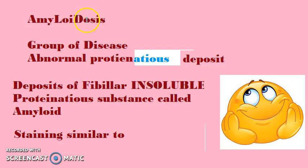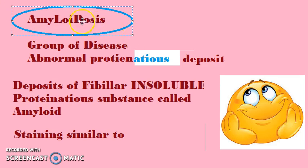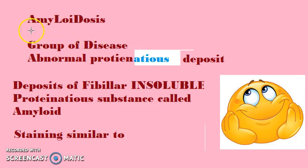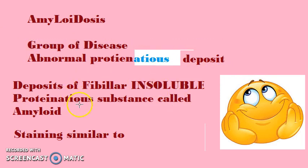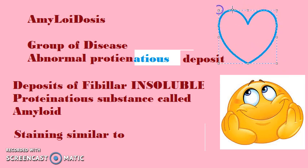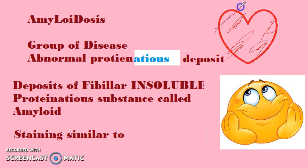Amyloidosis is a very important topic. Please look at the spelling: amyloidosis. It is a group of diseases where there are abnormal proteinaceous deposits. Consider any organ — in that organ there will be a lot of proteinaceous deposits which are insoluble, like in the heart. That is amyloidosis.